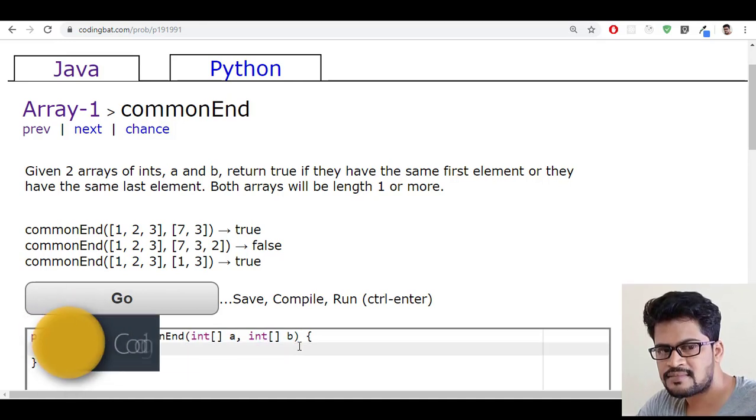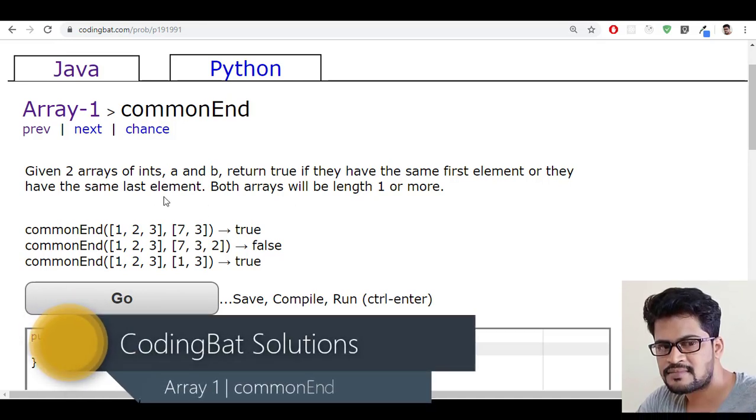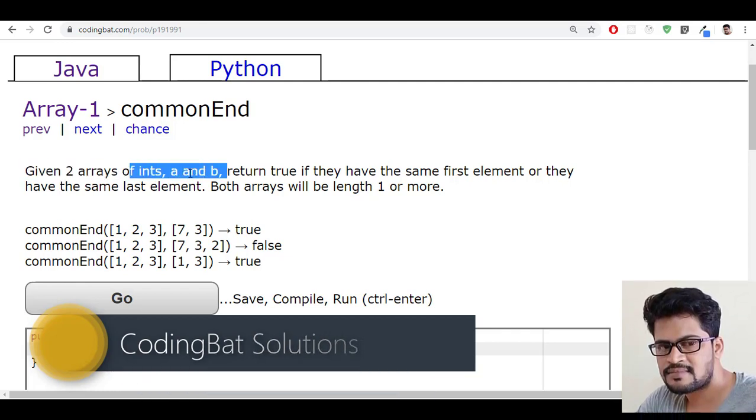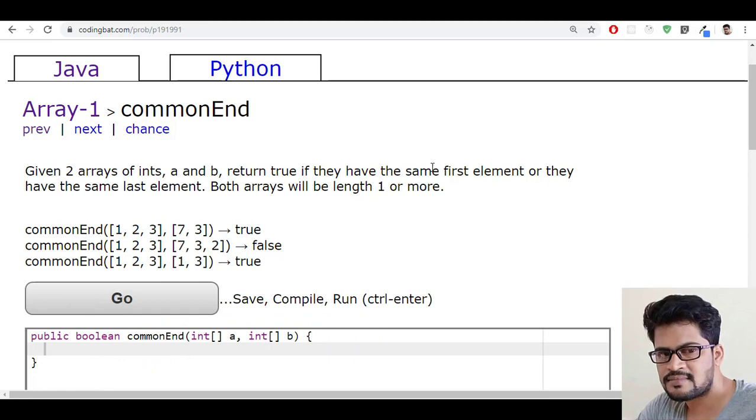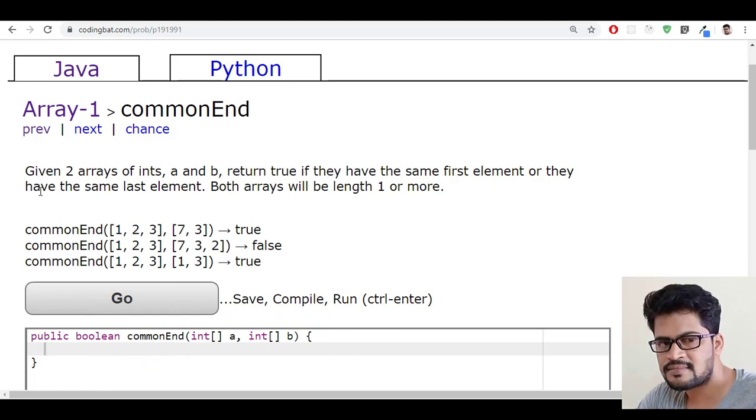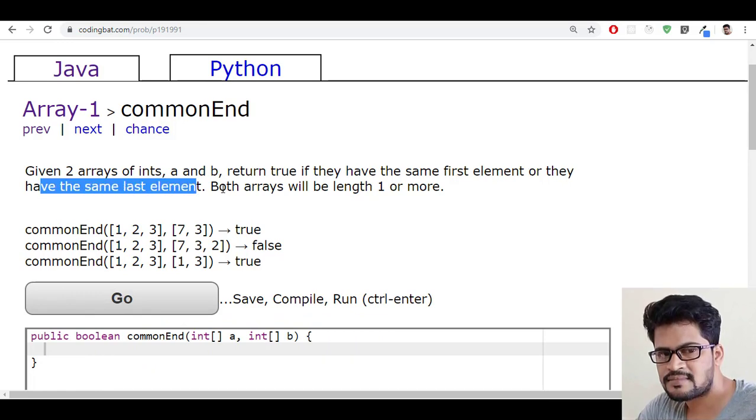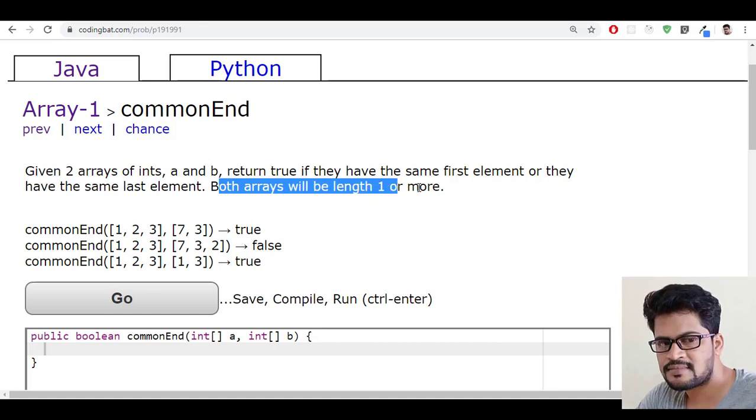The question is: given two arrays of integers a and b, return true if they have the same first element or they have the same last element.